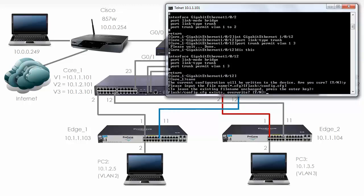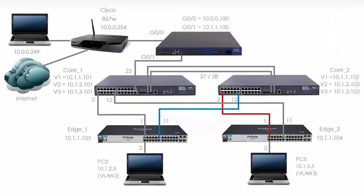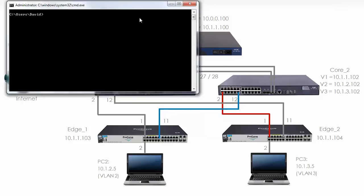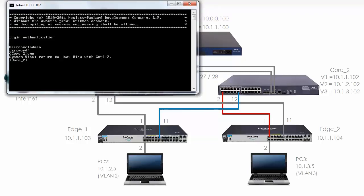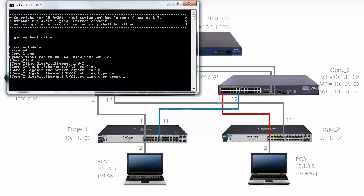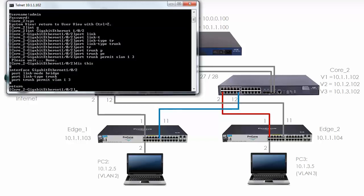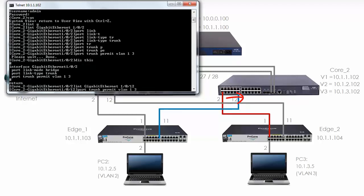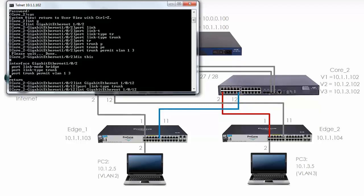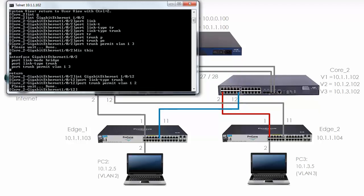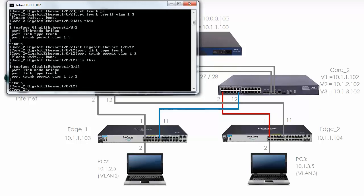Now let's configure core 2 — telnet to 10.1.1.102. In system view, interface Gigabit 1/0/2: set port link type to trunk, permit VLAN 1 and 3. On port 1/0/12: set port link type to trunk and permit VLAN 1 and 2. Both ports look correct. Let's save the configuration.